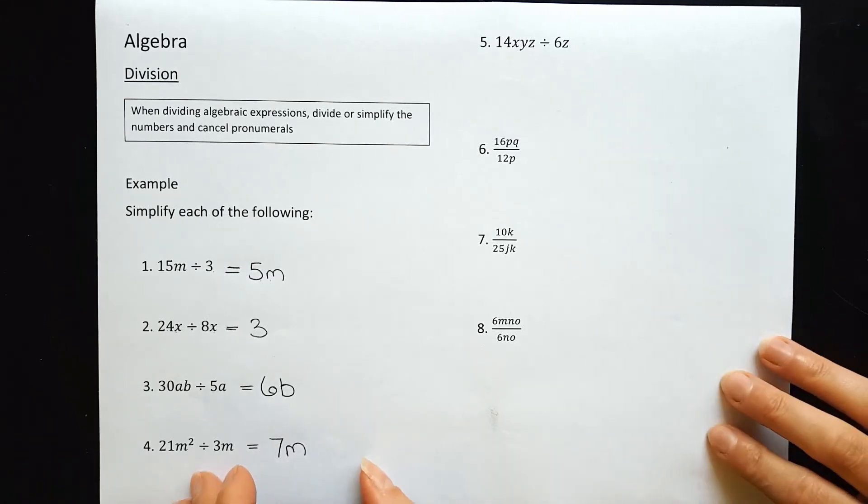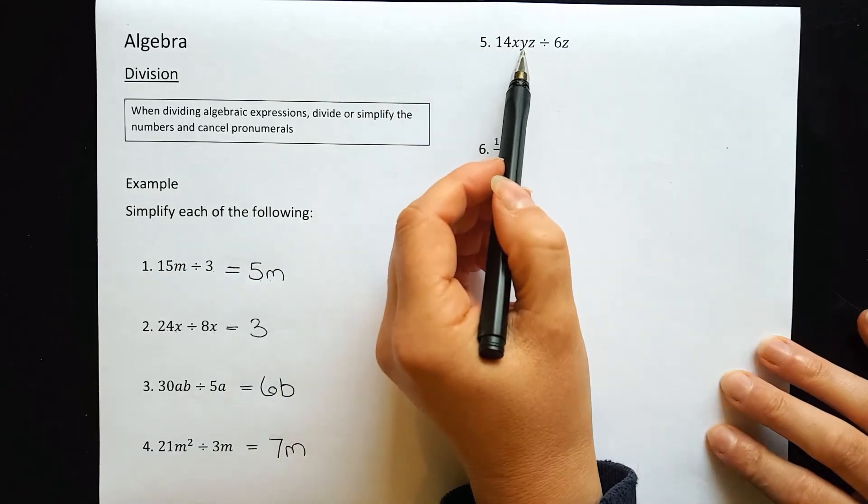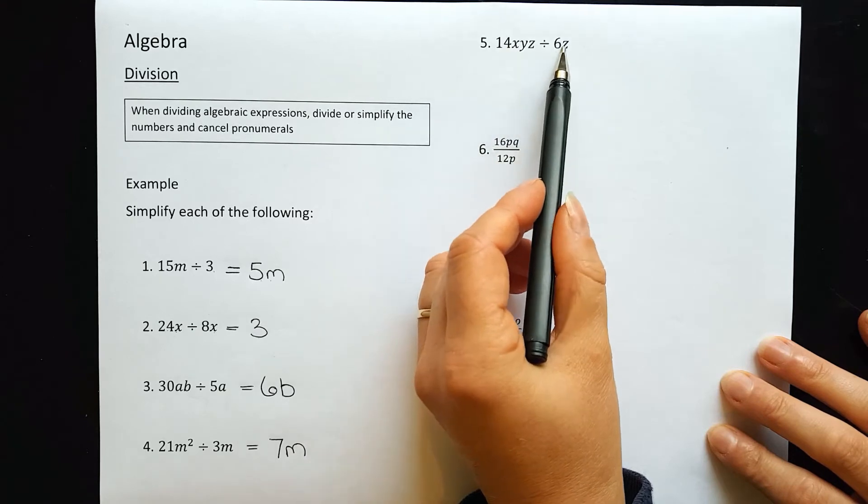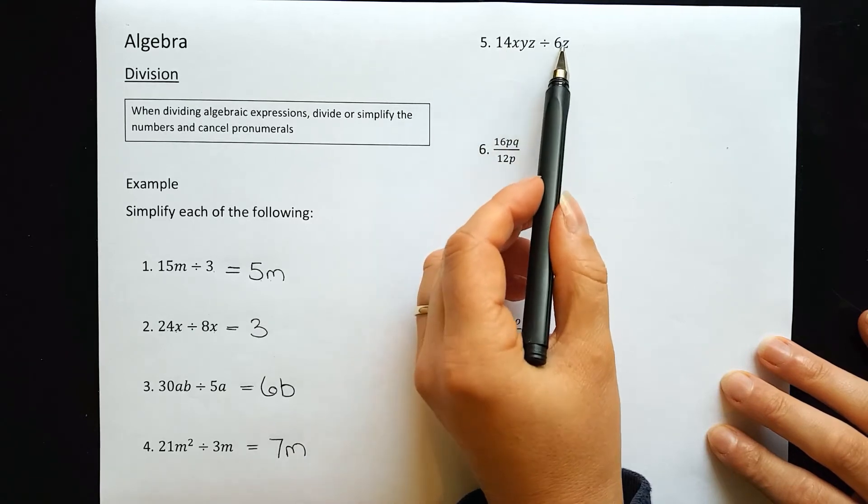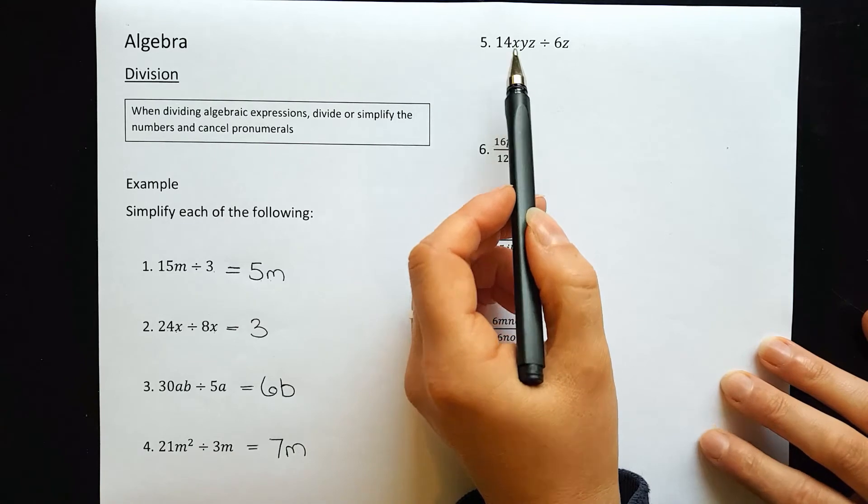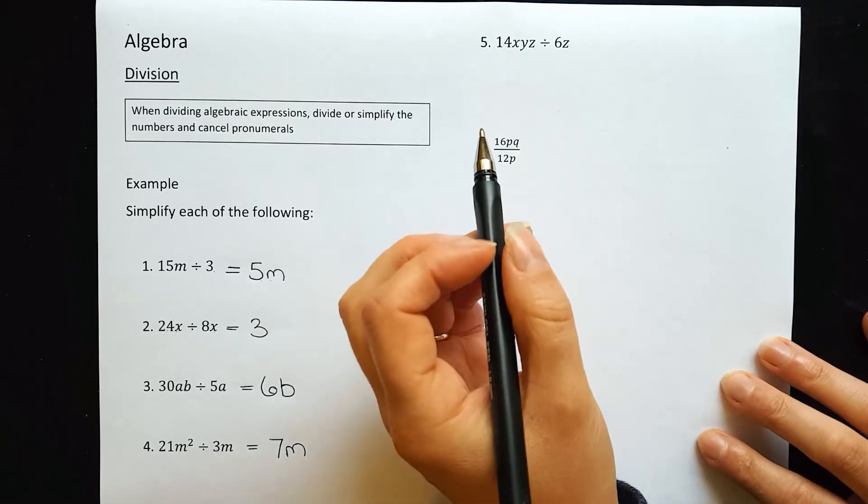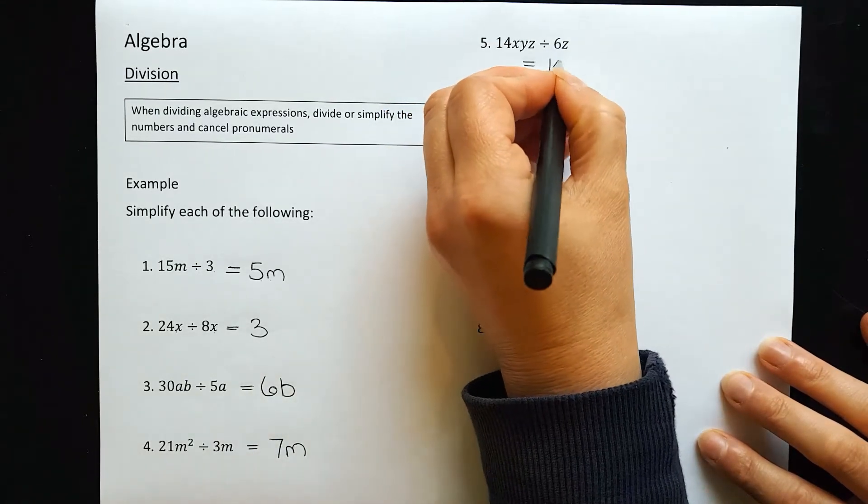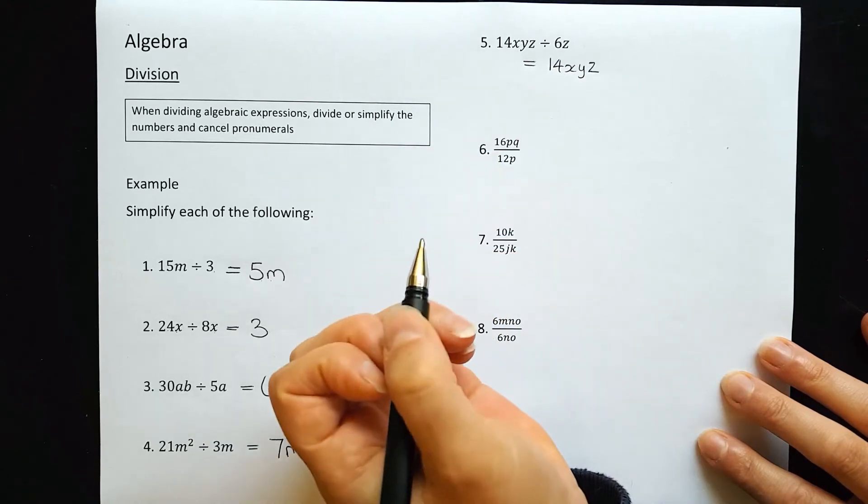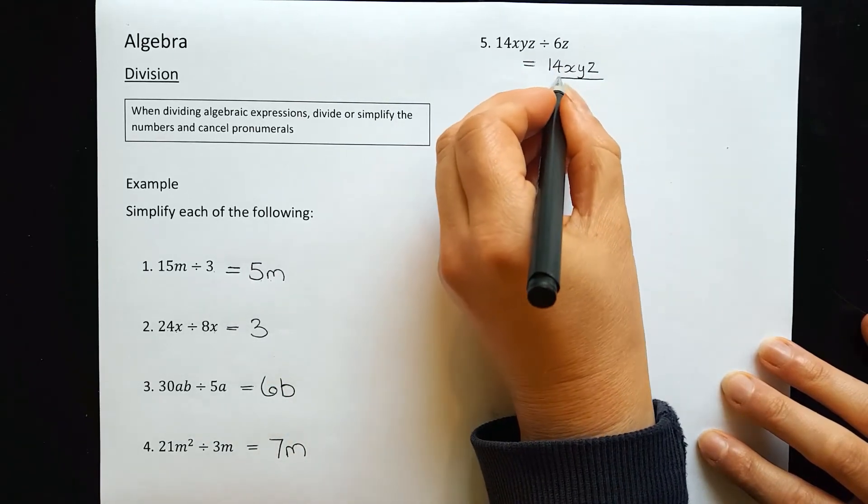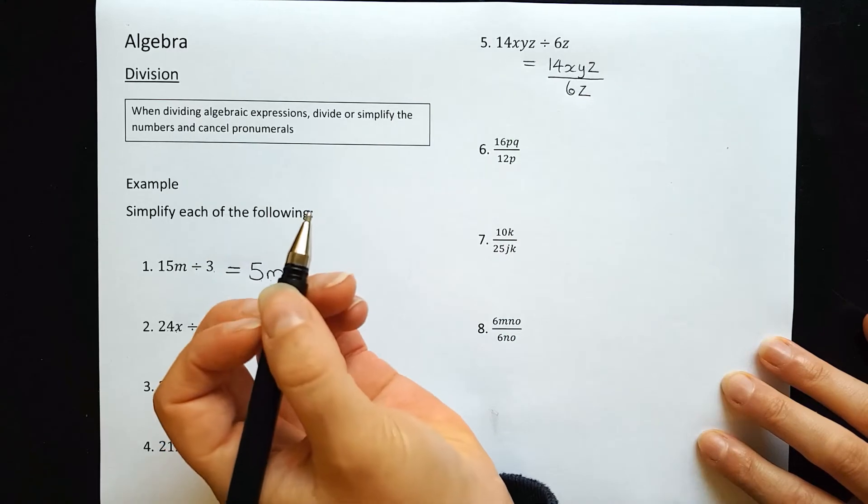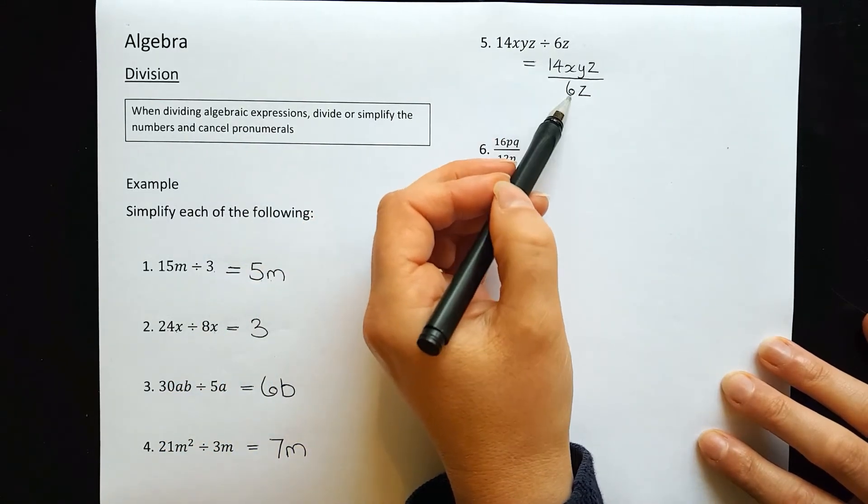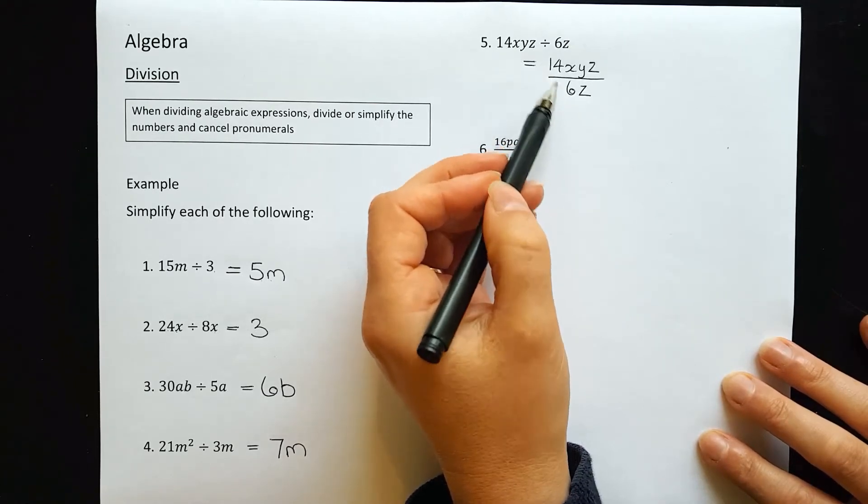Question 5: 14xyz divided by 6z. Now, 14 does not divide nicely by 6. So when that happens, write your problem as a fraction. That means 14xyz goes on top of the fraction over 6z. Instead of trying to completely divide 14 by 6, just look for a common factor you can simplify.